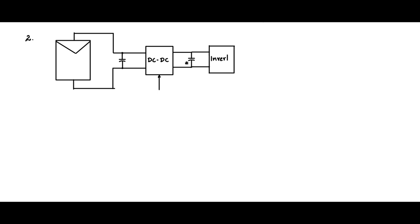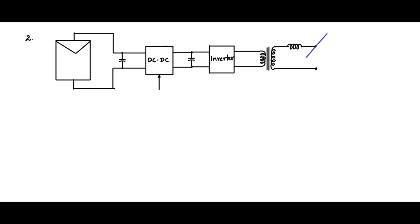The inverter will take the DC input from the output of this DC-DC converter, and the output of the inverter will get connected to an isolation stage — a transformer isolation followed by an inductor — which gets linked to the line and neutral of a single-phase grid system.